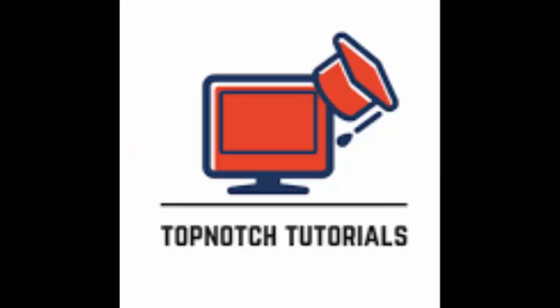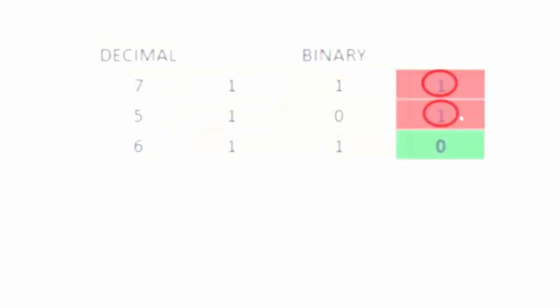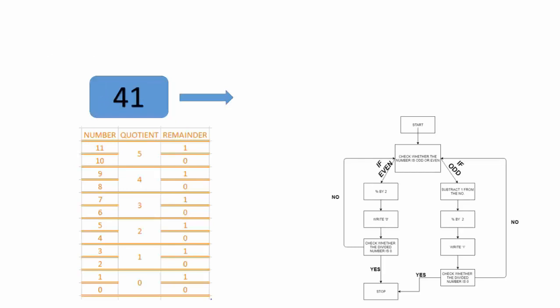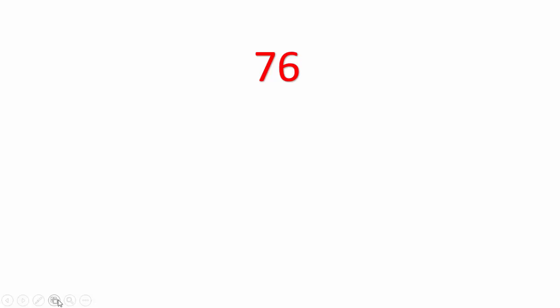Hello, welcome to Top-Notch Tutorials. In the last session we dealt with an algorithm of how to convert decimal numbers into binary numbers. In this session we'll continue with the same discussion — we'll take a few more problems to understand the basic algorithm in detail. Let us take examples like 17, 1102, and 607.